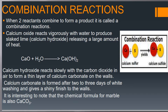Combination reactions: when two reactants combine to form a product, it is called a combination reaction. For example, calcium oxide reacts vigorously with water to produce slaked lime, or calcium hydroxide, releasing a large amount of heat. The equation is represented where calcium oxide (CaO) reacts with water and forms calcium hydroxide.